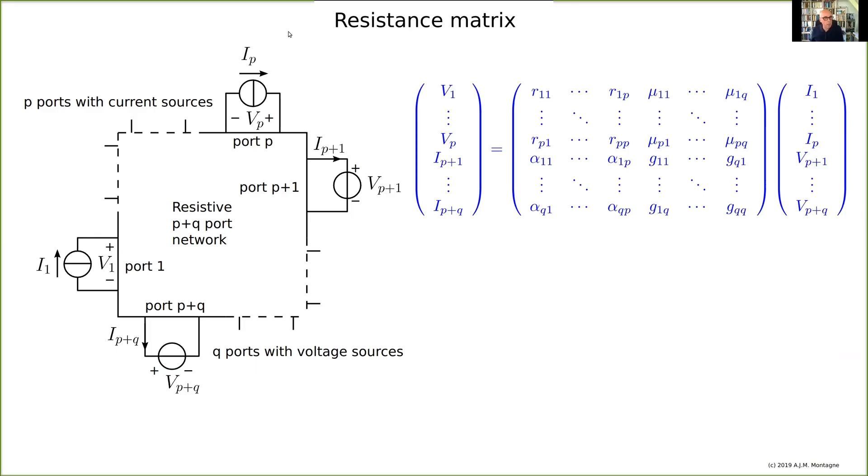Let's study the resistance matrix describing the transfer from the independent variables, the currents and the voltage sources I put on the ports, to the responses, the current through a voltage source, and the voltage caused by current sources.